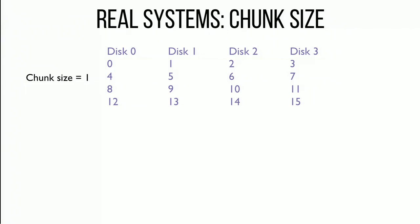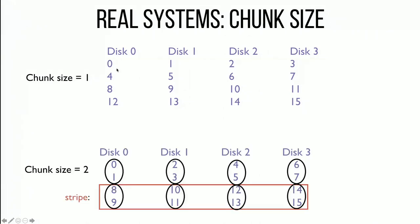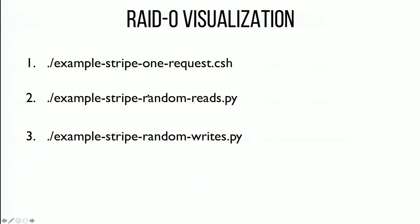Real systems are a little more complex. We've assumed a chunk size of one, but in general it would be inefficient to read just one sector or one block per disk. The RAID system combines multiple blocks into a chunk — you could have a chunk size of one, two, four, or eight blocks — and all the arithmetic would be based on chunks. We'll ignore that and assume a chunk size of one to keep things simple, but you might see that in more detail if you look into RAID further.